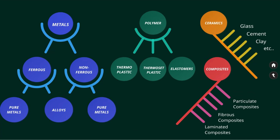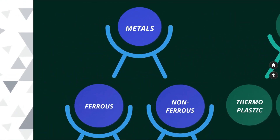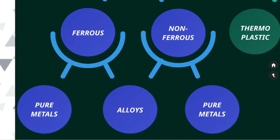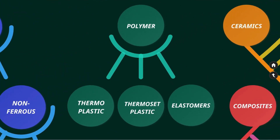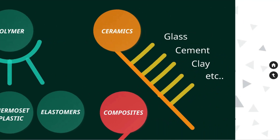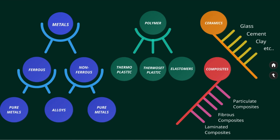This chart shows the subcategories of metals and polymers, and also examples of ceramics and composites. Metals are subdivided into ferrous and non-ferrous metals, each available in pure metal form and alloy form. Polymers are subdivided into three categories: thermoplastics, thermoset plastics, and elastomers. The other two categories are ceramics and composites.